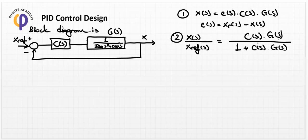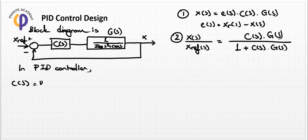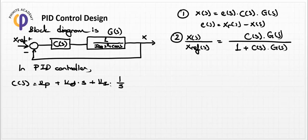With only the proportional factor, C(s) equals K_p. But in the PID controller design, we assign C(s) as the proportional term K_p, plus the derivative term K_d * s (since in the Laplace domain the derivative equals s), plus the integral term K_i divided by s. We then substitute this C(s) into the transfer function equation.